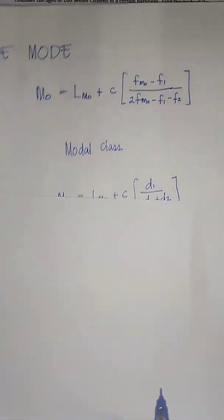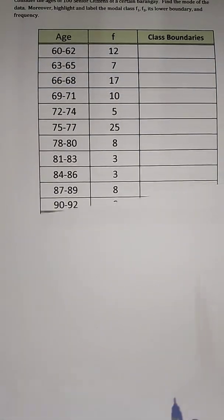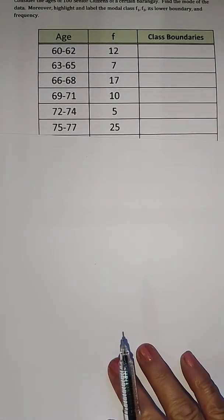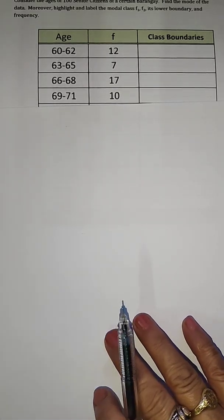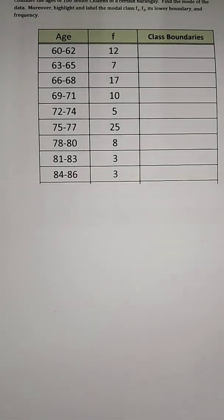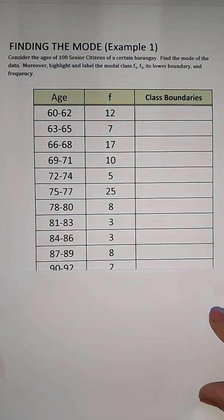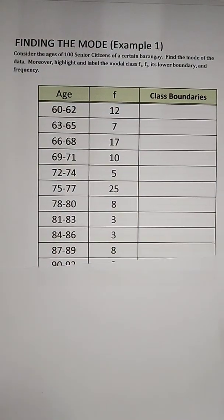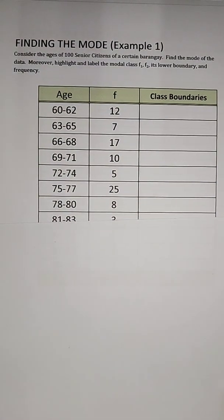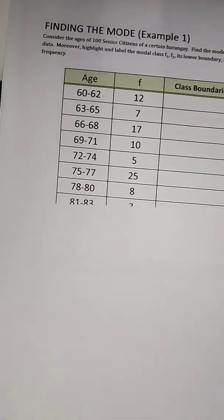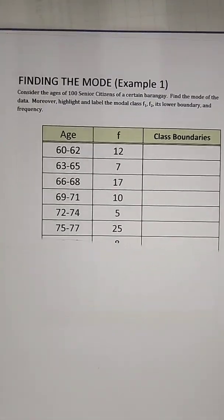Let's now proceed with our first example. Consider the ages of 100 senior citizens of a certain barangay. Find the mode of the data. Moreover, highlight and label the modal class F1, F2, lower boundary and the frequency.